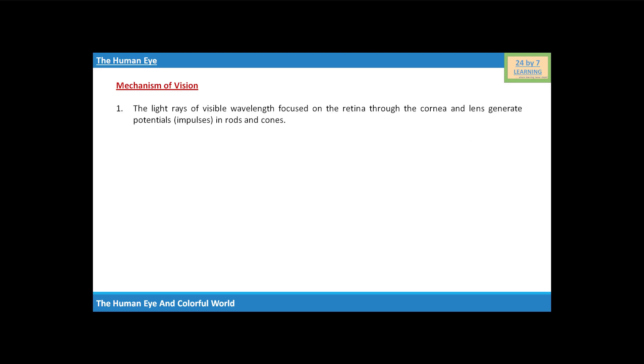The light rays of visible wavelength focused on the retina through the cornea and lens generate potentials or impulses in rods and cones. The photosensitive compounds, the photopigments in the human eyes, are composed of opsin, a protein, and retinal, an aldehyde of vitamin A.